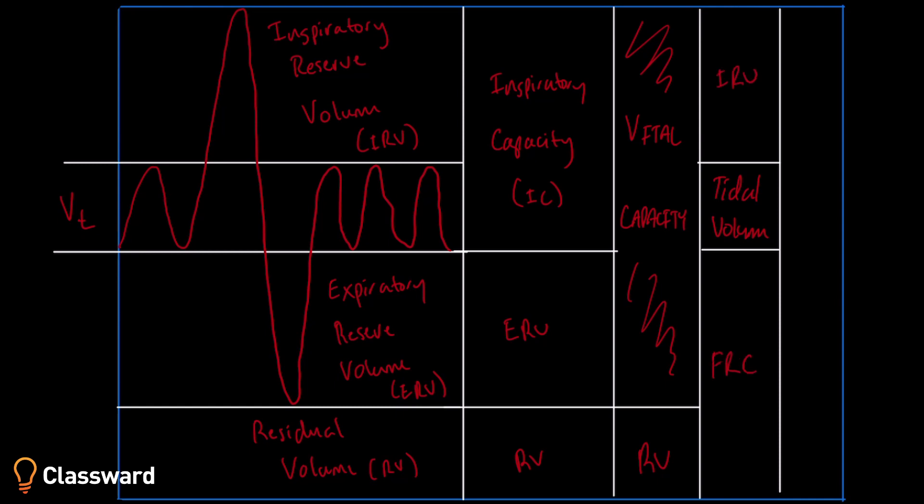The last thing here is functional residual capacity. It's going to be around 2,000 milliliters for the average adult. And as you can kind of see or guess, it's that amount of air that's in the lungs after you've done a normal exhalation. So again, it's not something we can fully access because it has that residual volume piece. It's not something that we could fully exhale out.